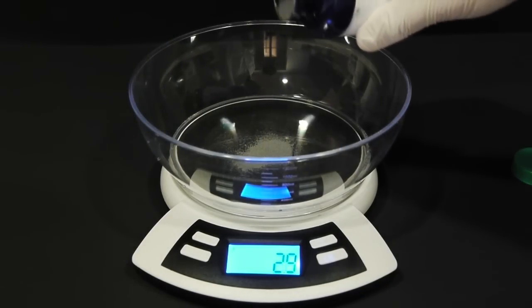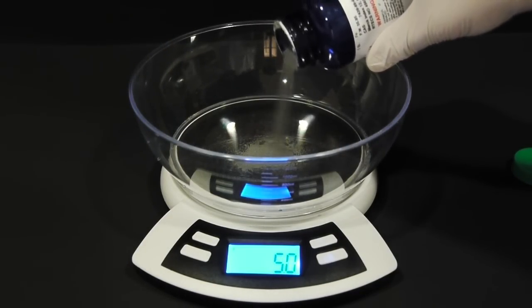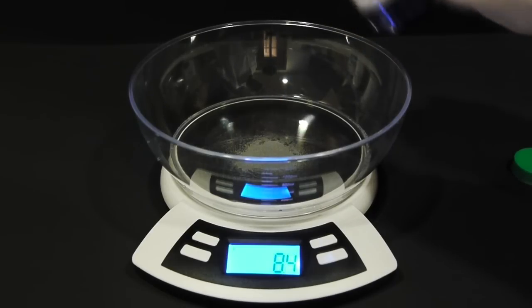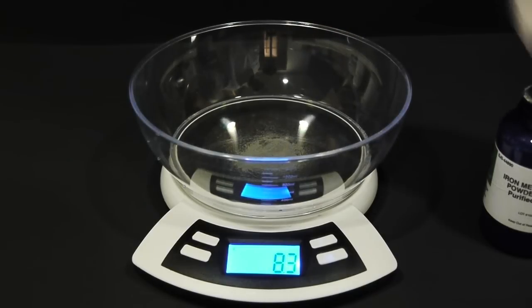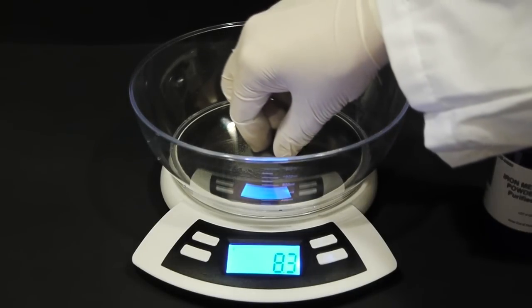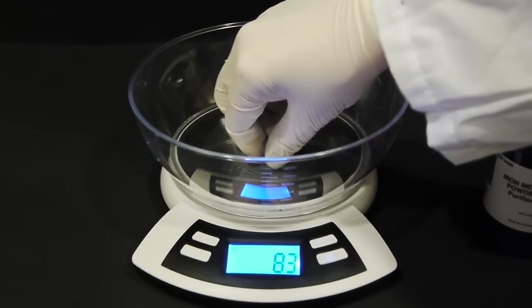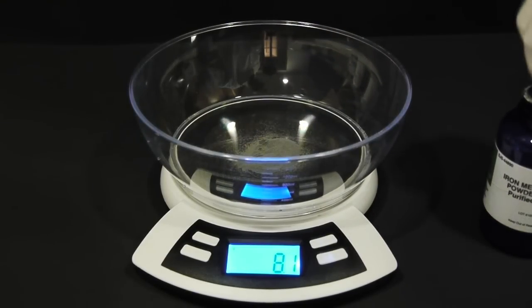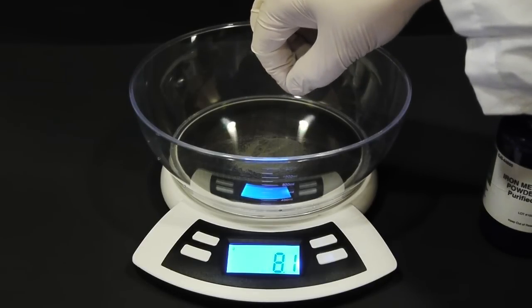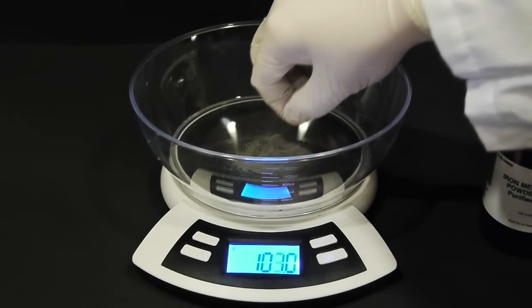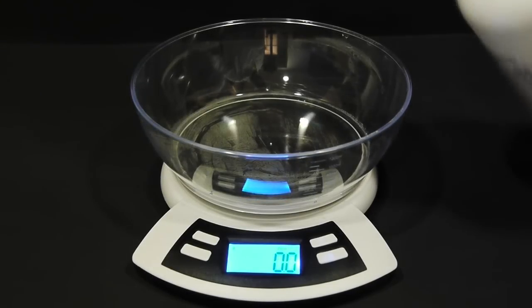Now to kick this off, I'm going to add 8 grams of iron powder. Now there are better ways to measure these substances. However, I'm going with the quick and easy method. This is where I pull it straight out of the bottle and then remove the remnants with my fingers. Of course, I'm wearing gloves. We're close. Almost there. Boom. 8 grams. Excellent.